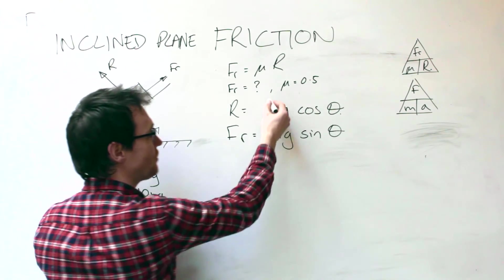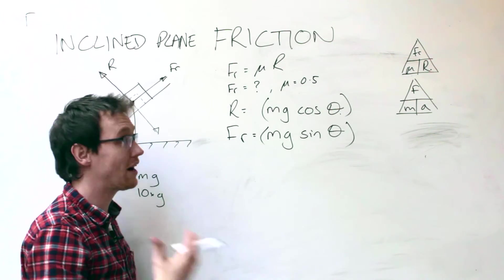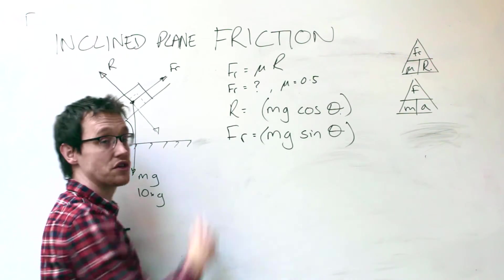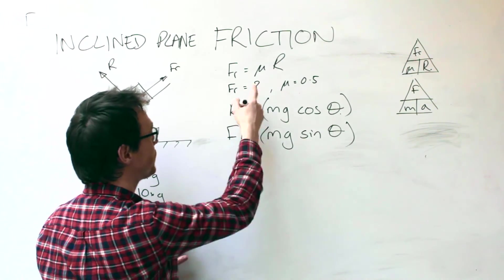So what I'm going to do now is I have a statement for the reaction force, I have a statement for the frictional force, I'm going to substitute those into my friction equals mu R because I know that everything at the moment will be in balance.